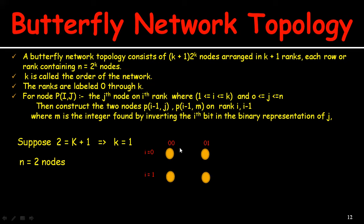Now the question is how we can make the connection between the nodes. The connection is made using this particular algorithm. For node p_(i, j), here j is the row node index and i is the rank. The value of node (0,0) is 0 and (0,1) is 1. Since i must start from 1, i = 1. Starting with j = 0, that is node (1,0), this node is going to connect with two nodes: p_(i−1, j) and p_(i−1, m).